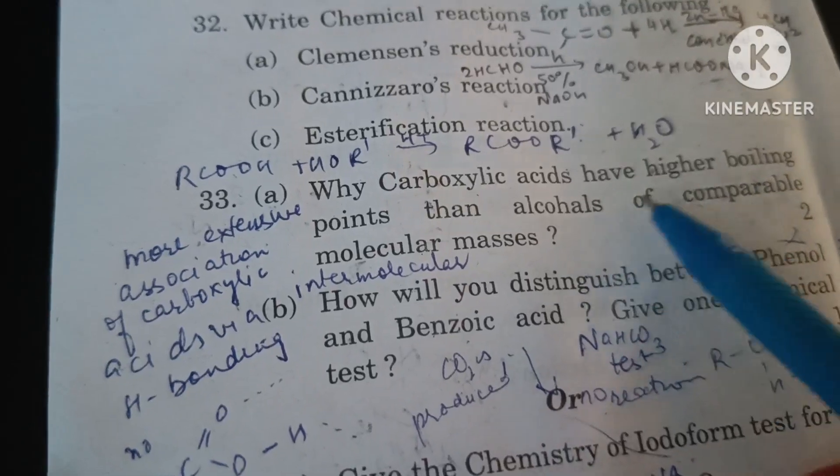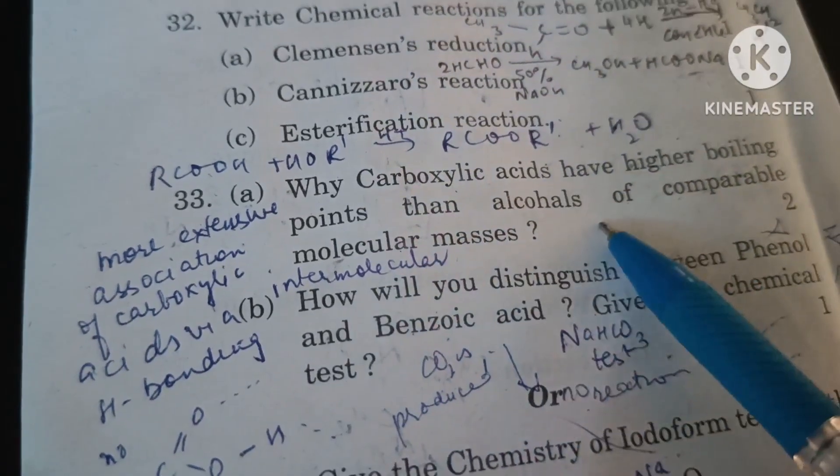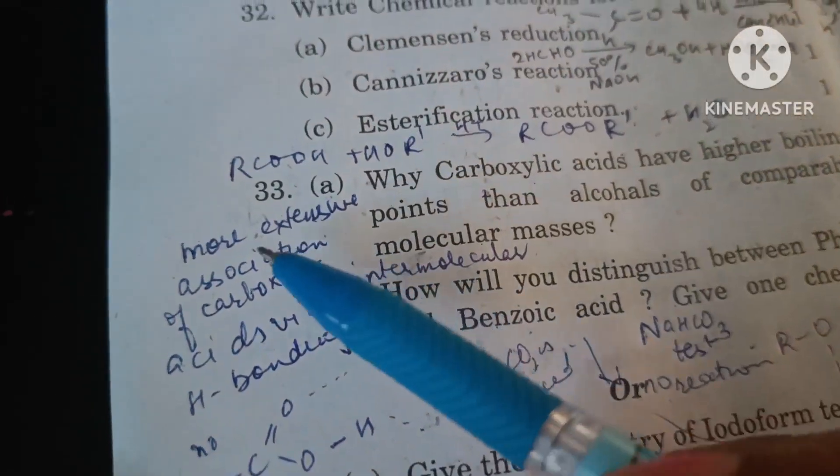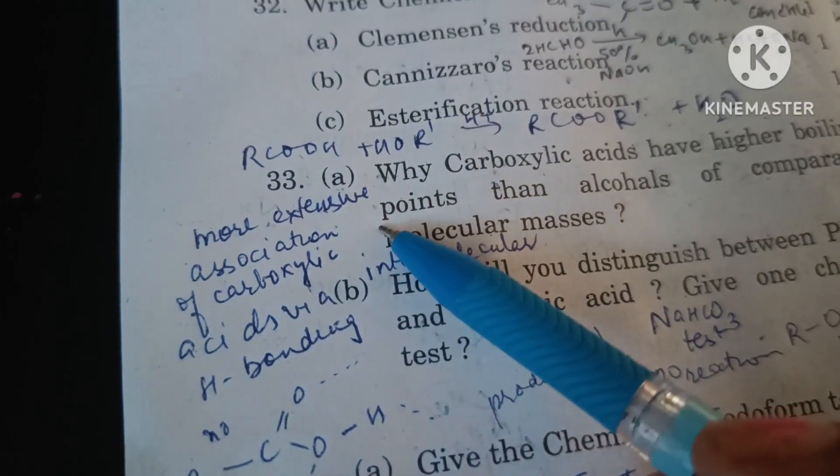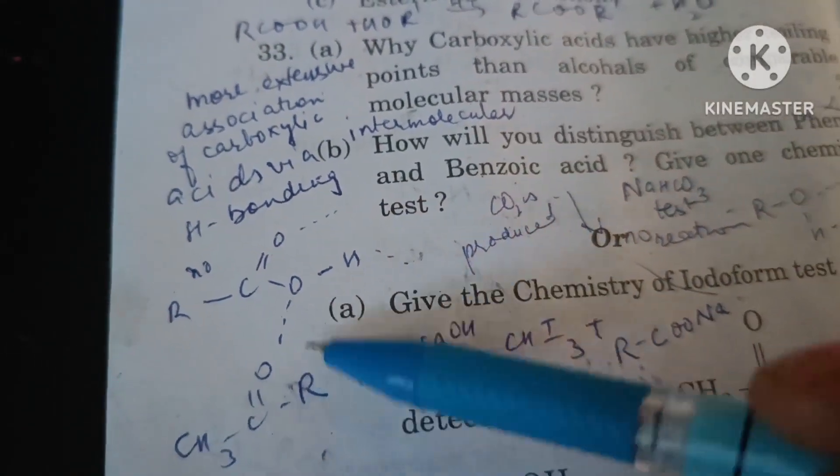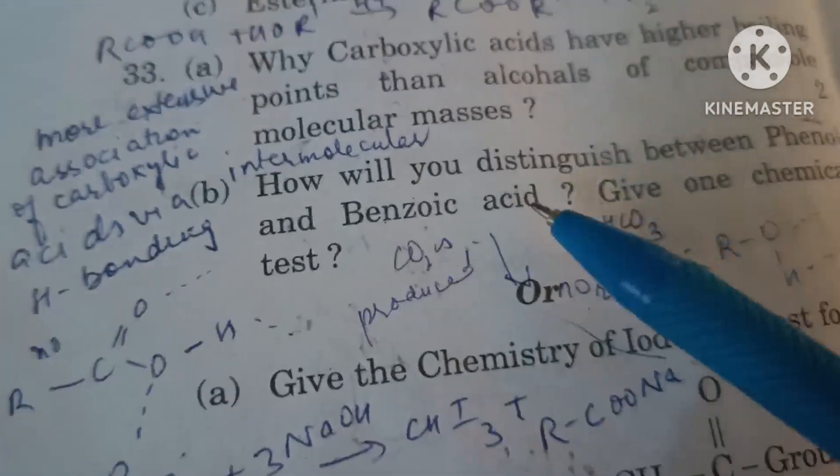Why carboxylic acids have higher boiling point than alcohols of comparable molecular masses? It is because there is more extensive association between carboxylic acids due to stronger hydrogen bonds and greater number of hydrogen bonds as compared to alcohols.